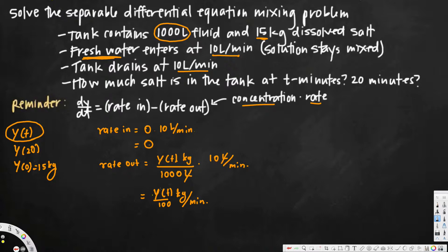Now we plug these into the equation: dy/dt equals rate in minus rate out. Rate in is zero, minus rate out which is y/100. So dy/dt equals negative y over 100.